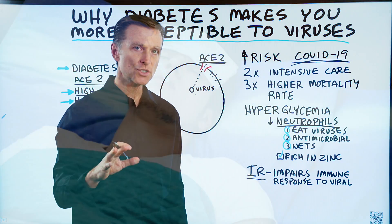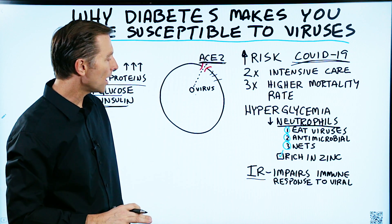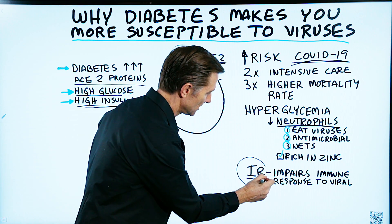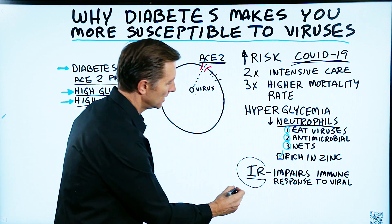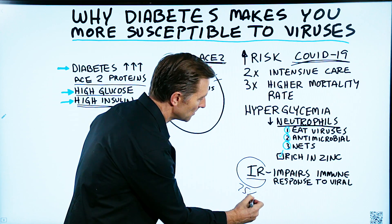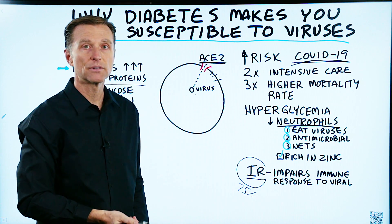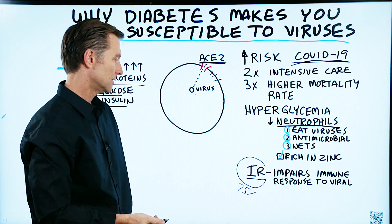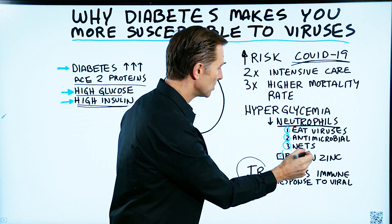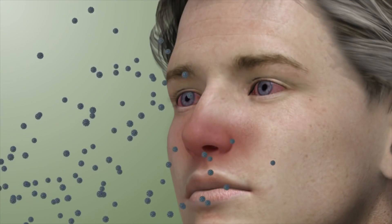There are a couple of additional reasons you need to know about. Number one: the condition insulin resistance. About 75% of the population has insulin resistance, so it's very common. Insulin resistance can impair your immune response to a virus.